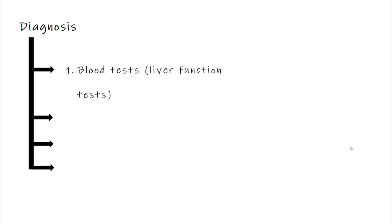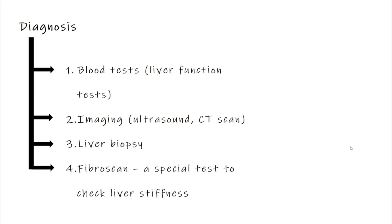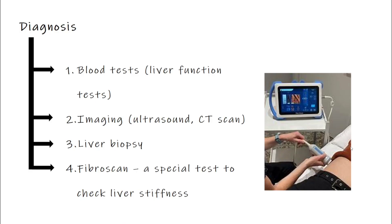So how is liver cirrhosis diagnosed? It usually starts with blood tests, especially liver function tests, which check how well your liver is working. Next, doctors often use imaging techniques like an ultrasound or CT scan to look at the size, shape, and texture of the liver. Sometimes they may do a liver biopsy — a small piece of liver tissue is taken and looked at under a microscope to check for scarring. There is also a newer non-invasive test called FibroScan, which measures how stiff the liver is — and stiffness is a sign of scarring.